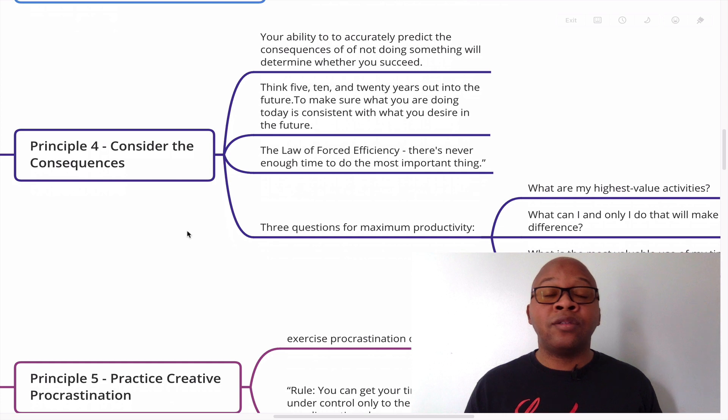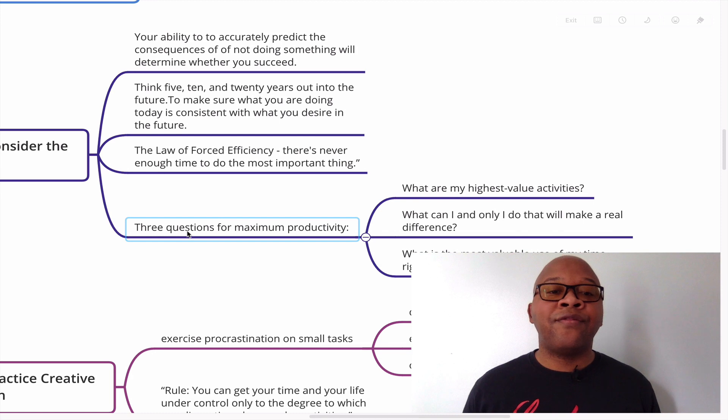Principle number four, and again, these are my biggest takeaways from the book. So some of these may not be in the order that you'll find them in the book. Principle number four is consider the consequences. Your ability to accurately predict consequences of not doing something will determine whether you succeed. Think 5, 10, 20 years out into the future to make sure what you are doing today is consistent with what you desire in the future. The law of forced efficiency. There's never enough time to do the most important thing. You'll always have a lot of things to get done. You'll always have a lot of undone tasks, uncompleted tasks. But the goal is to focus on the highest priority.